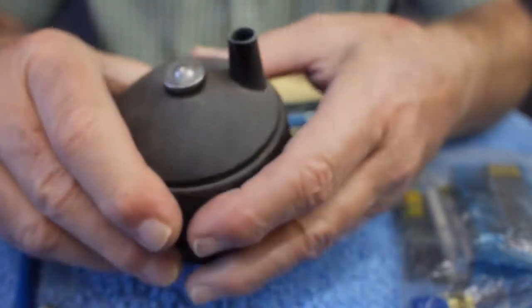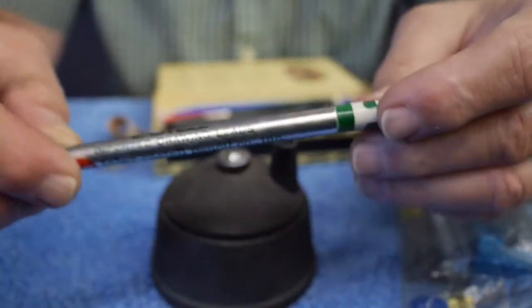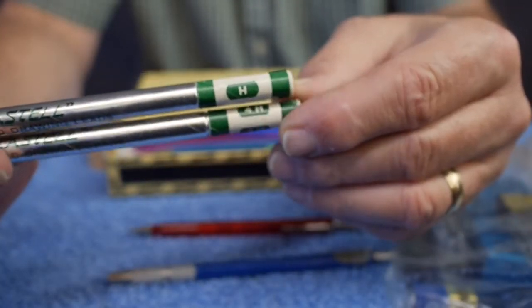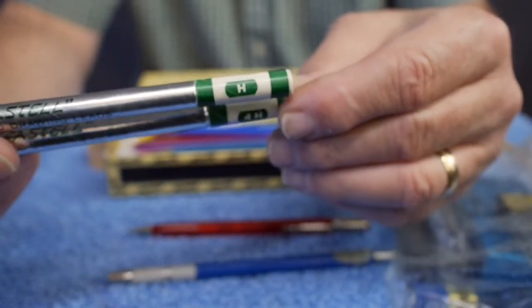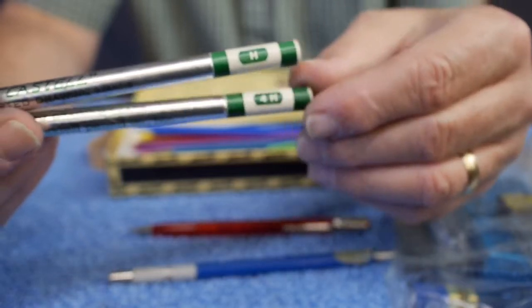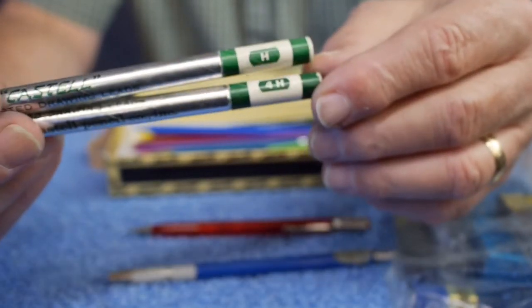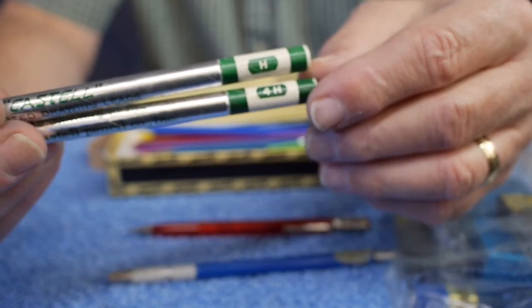So this was my very first. I had several different types of hardness. I have two varieties of lead hardness, H and 4H. These are available from drafting supply stores and art supply stores.